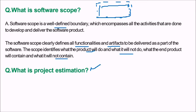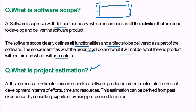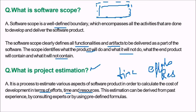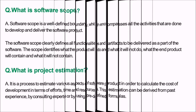What is project estimation? Project estimation is a process to estimate various aspects of a software product in order to calculate the cost of development in terms of effort, time, and resources. This estimation can be derived from past experience, by consulting experts, or by using predefined empirical formulas and quantitative metrics.